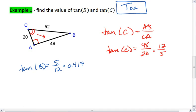which reduces to 12 fifths. Or, we can use our calculators and realize that this is 2.4. Thus, tan C is 12 fifths or approximately 2.4.